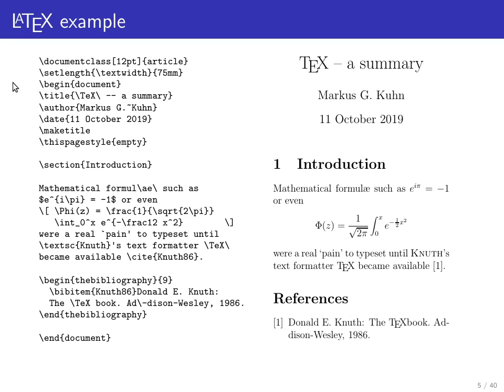We have macros to set certain internal variables. We specify a title, an author, and a date, then we call the macro make title to actually output that data.